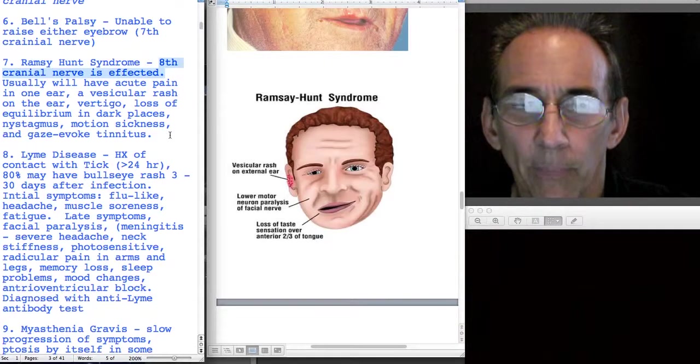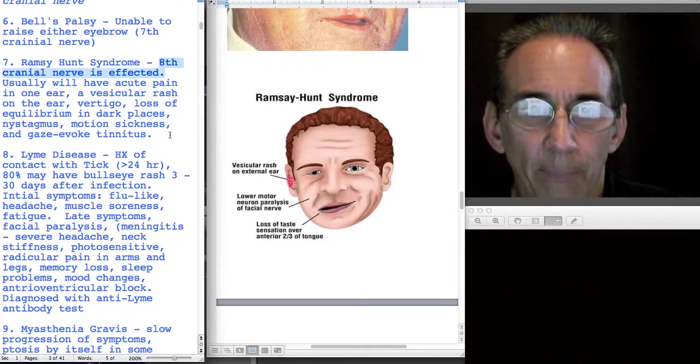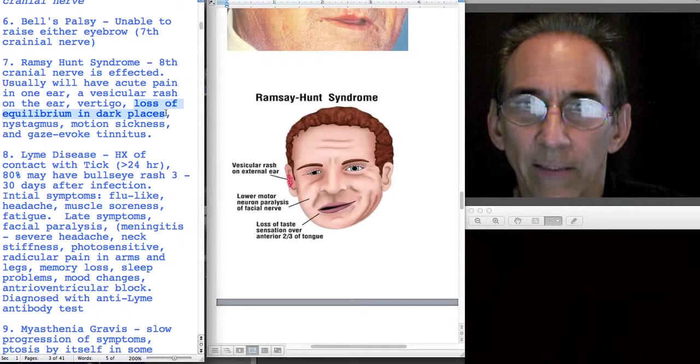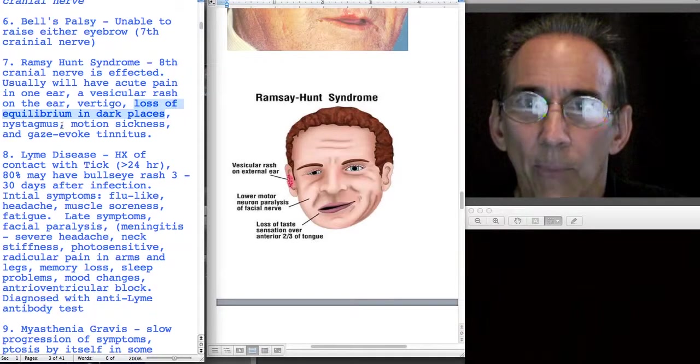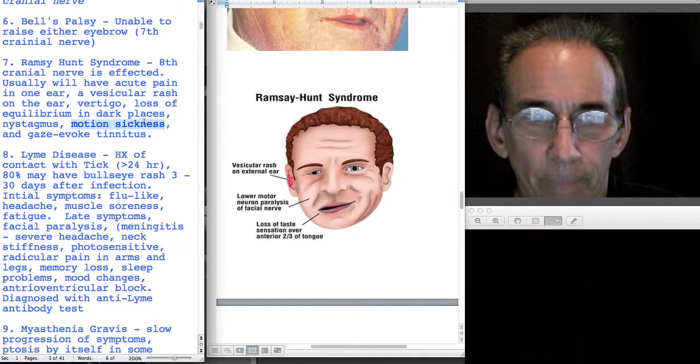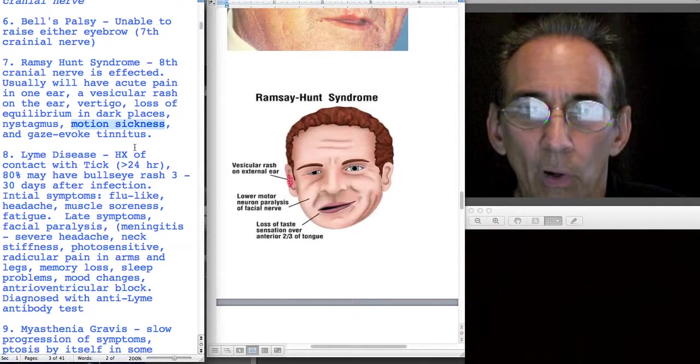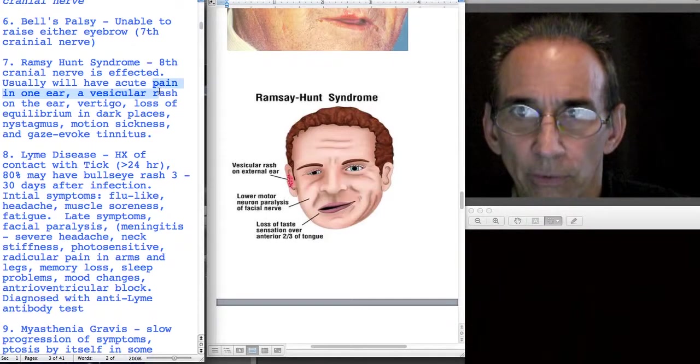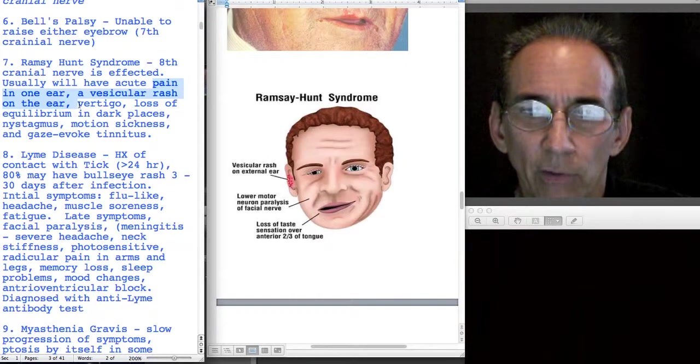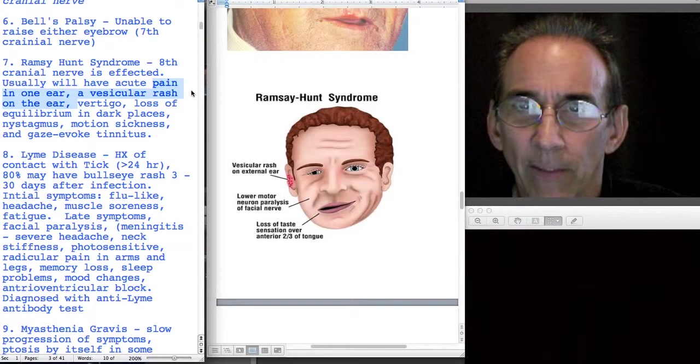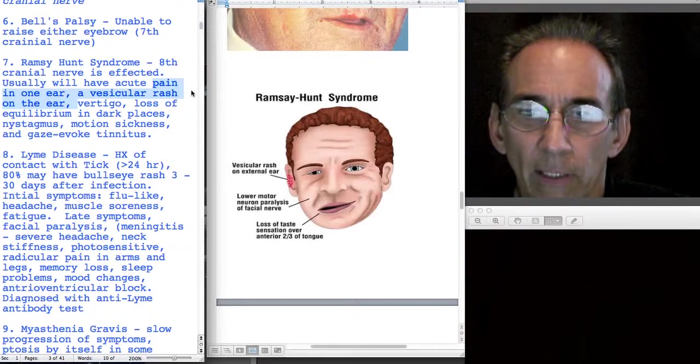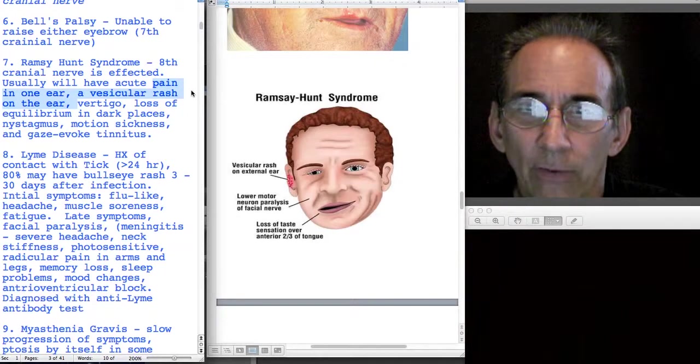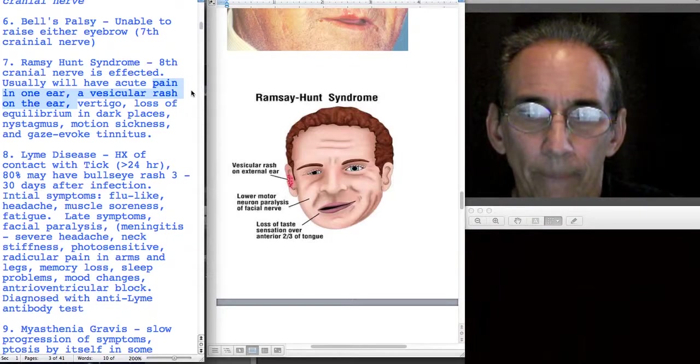By the way, sometimes people with Bell's palsy will also complain of that. They may have vertigo and loss of equilibrium, especially when it's dark and they cannot see. They may be more likely to have motion sickness. They're also more likely to have pain in the ear and especially vesicles on the ear. That's because the eighth cranial nerve is infected, believed to be some sort of virus, could be like a mild herpes case causing that eighth cranial nerve to have those vesicles.